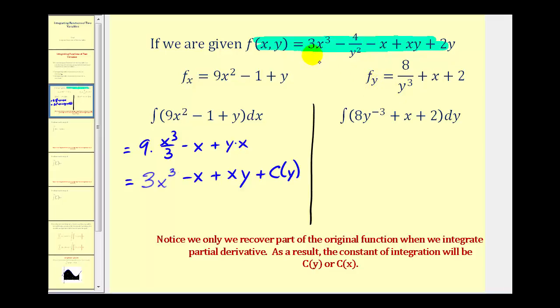Now let's determine the partial of f with respect to y. Here we'd have zero, here we'd have 8 over y cubed, this would be zero, this would be plus x, and this would be plus 2. Remember we're treating x as a constant.